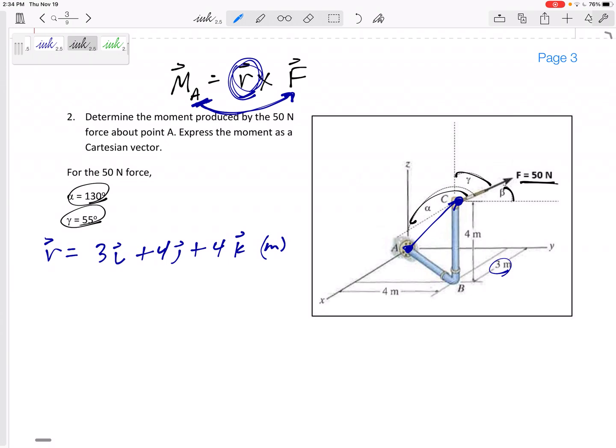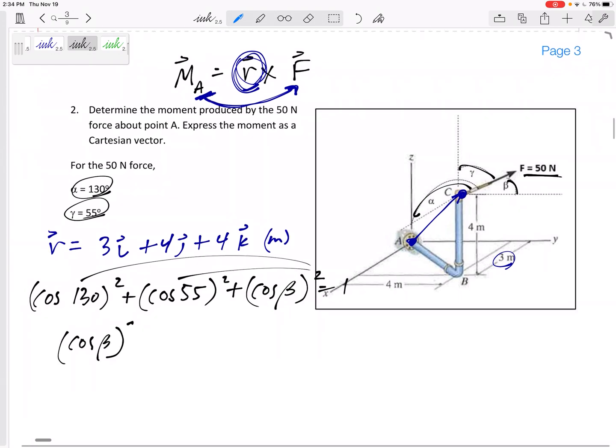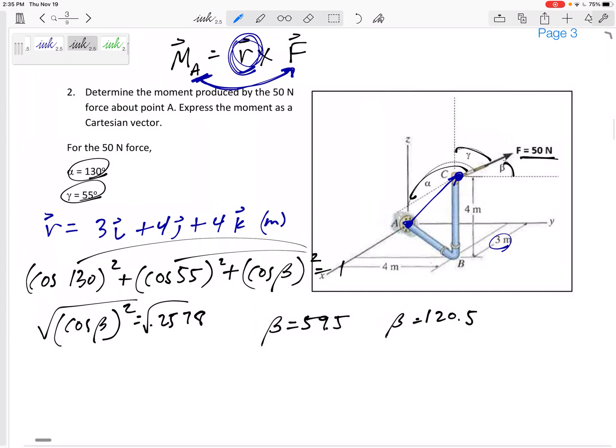How can we find the third? Well, cosine alpha squared plus cosine beta squared plus cosine gamma squared adds up to one. So I can say cosine of 130 squared plus cosine of 55 squared plus cosine of what I'm looking for. I don't know beta squared adds up to one. So, you know, subtract those, the other side of the equation, cosine beta squared should be 0.2578. So take the square root of both sides. Now this could be positive or negative. This could be positive or negative. And so my calculator is going to, if I use the positive, I'm going to get beta is 59.5.